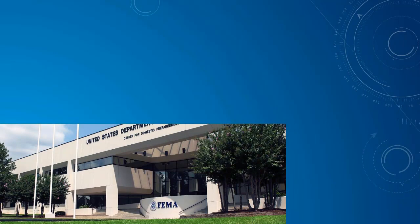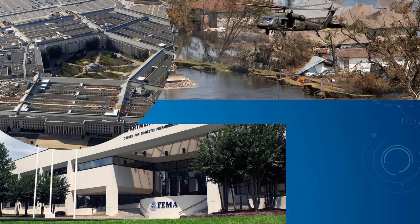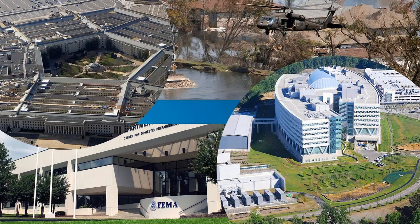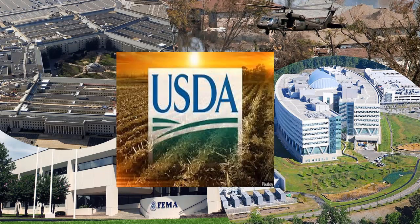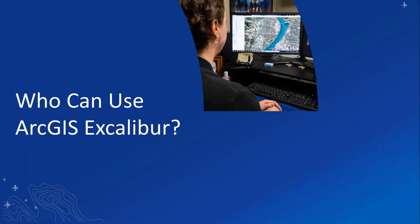Who are the users or organizations that can benefit from Excalibur? We have organizations like Department of Homeland Security, Department of Defense. Excalibur also supports disaster response organizations, the intelligence community including international and national security, as well as organizations like the Department of Agriculture. First, we have Jane, what we consider an all-source analyst. This person may or may not be a highly trained imagery or GIS specialist, but she can use Excalibur to quickly find imagery to support humanitarian relief requirements.